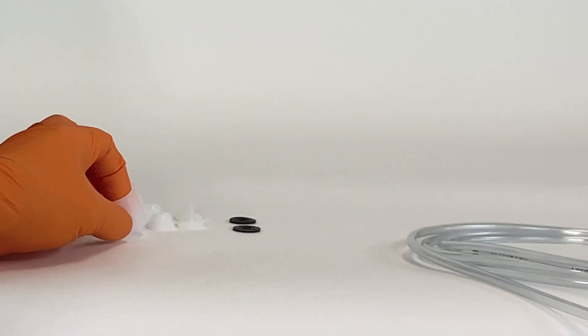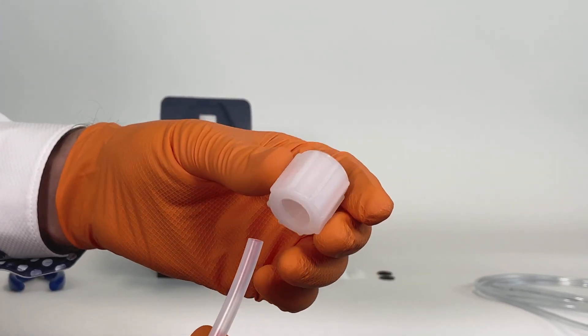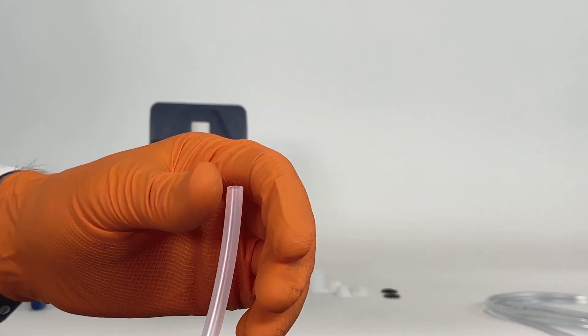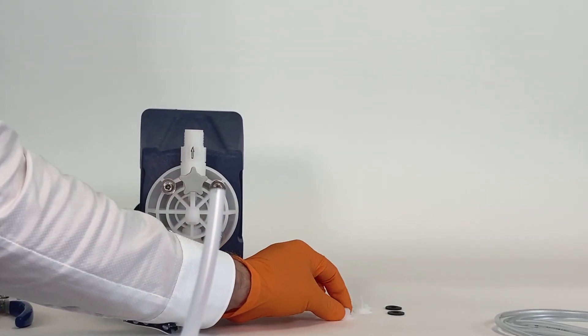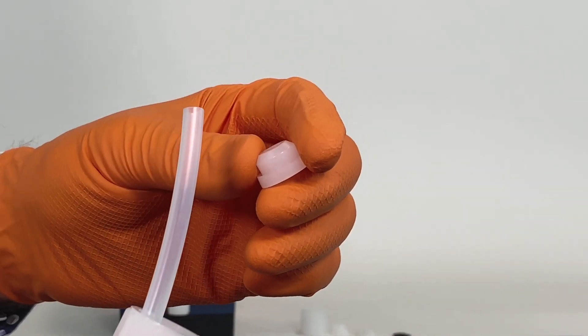As a second step, take the union nut and put it over the tube. This is followed by the clamp ring.